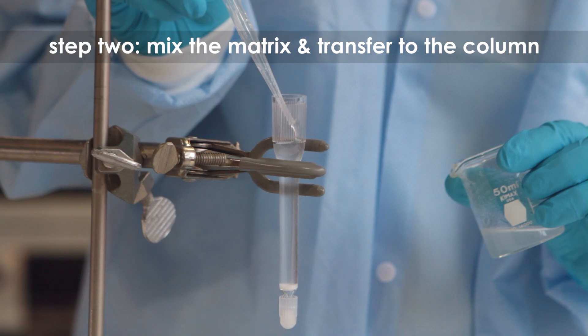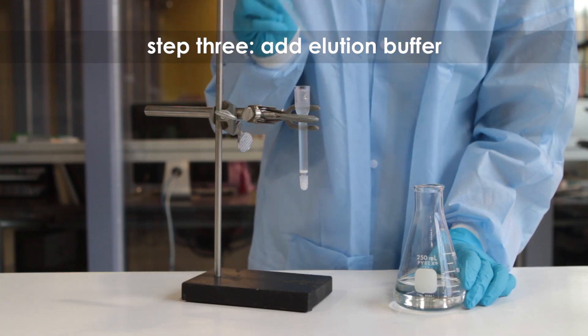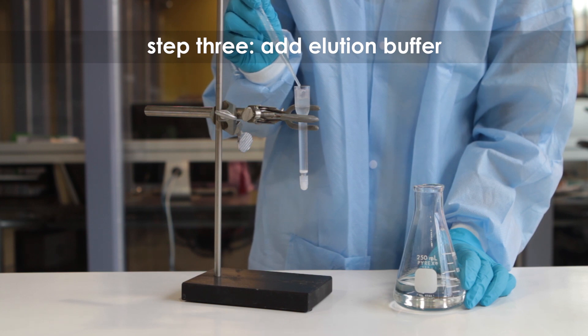Step 3: Using a transfer pipette, add elution buffer to the column's reservoir.